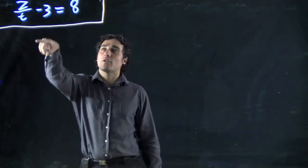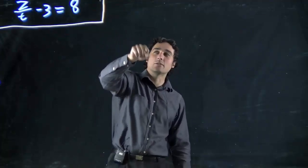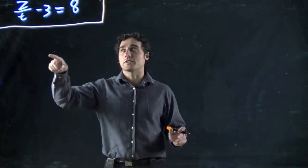Alright, this time we're looking at z over t minus 3 equals 8 and what we're going to be trying to do is solve for z.